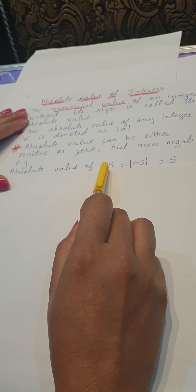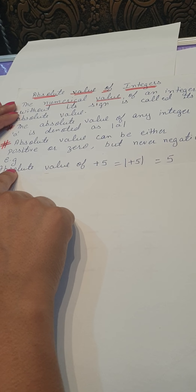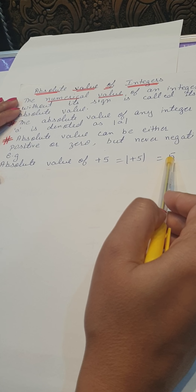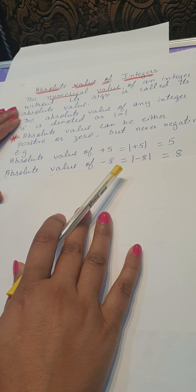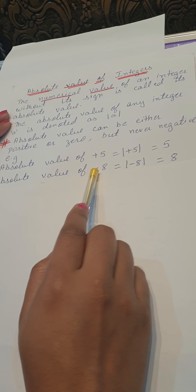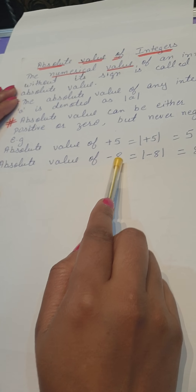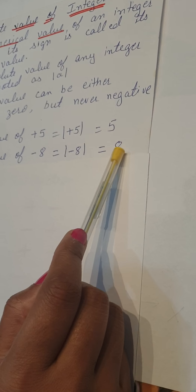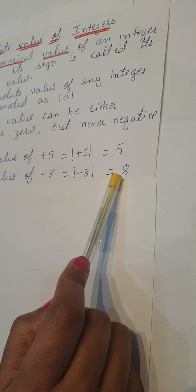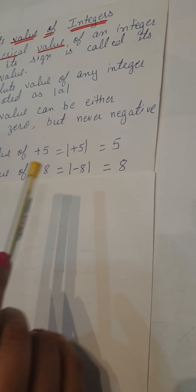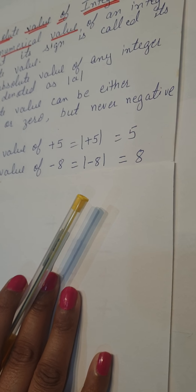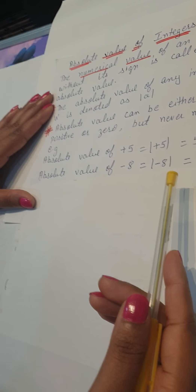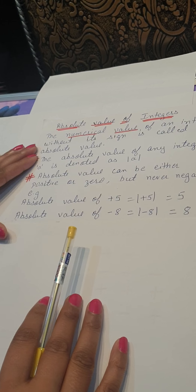See the examples. The absolute value of plus 5: we write |5| and the answer is 5. Similarly, the absolute value of minus 8: |minus 8| is simply 8. We do not put any minus sign — it becomes positive. So absolute value can be positive or 0 but never negative. For example, the absolute value of minus 100 is 100.